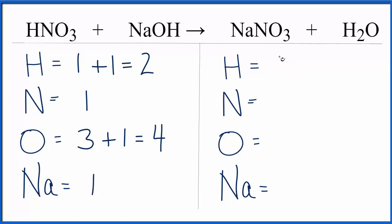Over on the product side, we have hydrogens two, nitrogen one, oxygens, we have three, and then we got one over here, so three plus one, that equals four, and then sodiums, we have one.